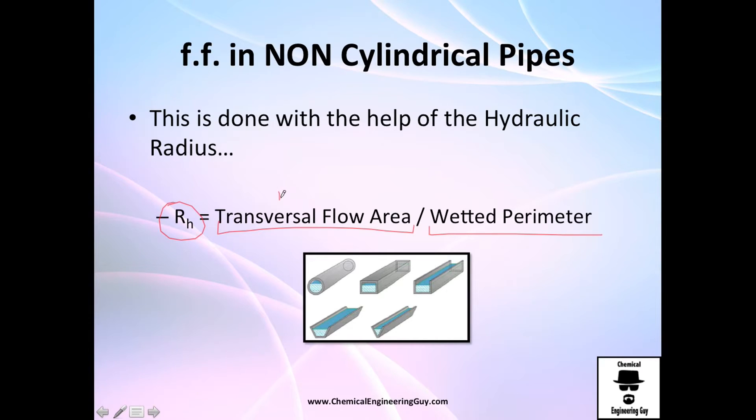What does this mean? Essentially, the area of flow divided by the perimeter of flow. And as you can see, square meters divided by meters will give me meters, which is an equivalent unit of a radius.